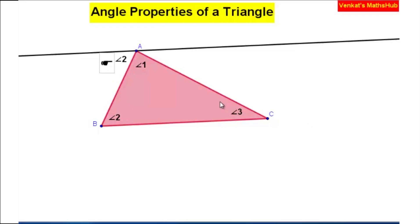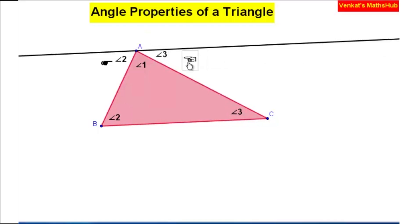Similarly, this angle will be equal to the corresponding angle here — the same angle will be here. So this is also angle three. Alternate angles are equal. This angle will be equal to angle three, and angle two equals angle two by alternate angles.